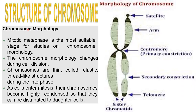Mitotic metaphase is the most suitable stage for the study of chromosome morphology. Chromosome morphology changes during cell division. Chromosomes are thin, coiled, elastic, thread-like structures during interphase. As the cell enters mitosis, their chromosomes become highly condensed so that they can be distributed to daughter cells.